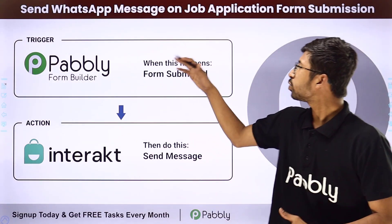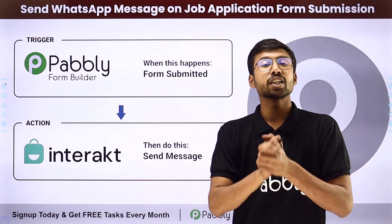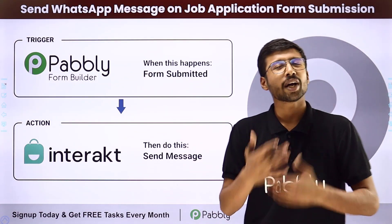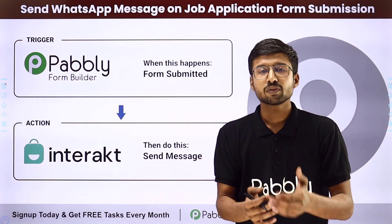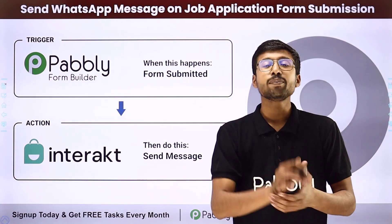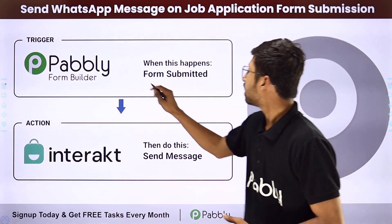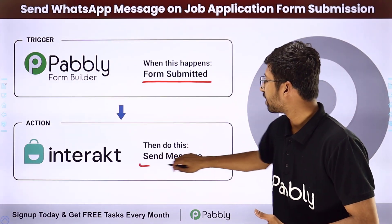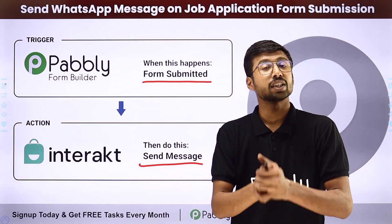In this video, we are going to learn how to send a WhatsApp message on job application form submission. Suppose you are working in an organization or you run a business and you have created a job application form using Public Form Builder or any other online form building application. Whenever a candidate fills the form and submits it, you want to send them a WhatsApp message. You can actually automate this process. The trigger of this automation will be getting a new form submission in Public Form Builder, and the action will be sending a WhatsApp message to the applicant using Interact, which is one of the official business APIs of WhatsApp.